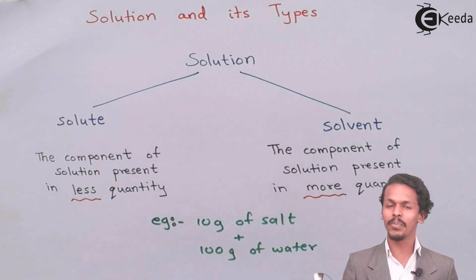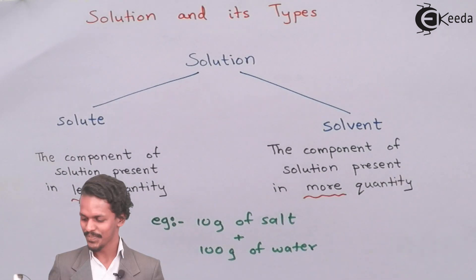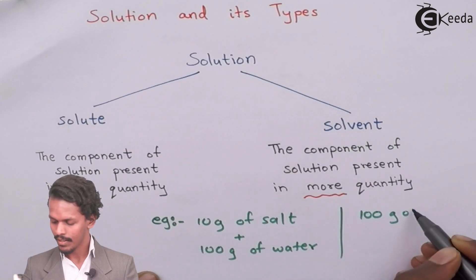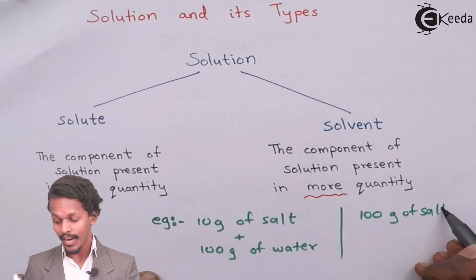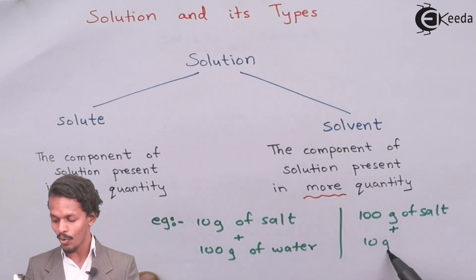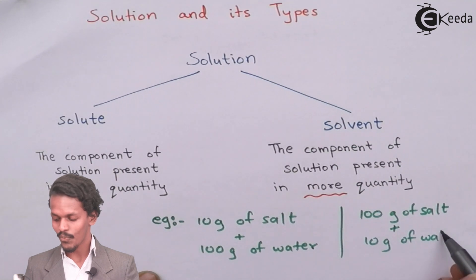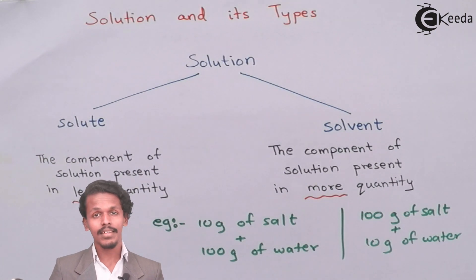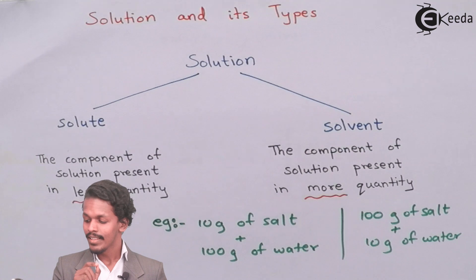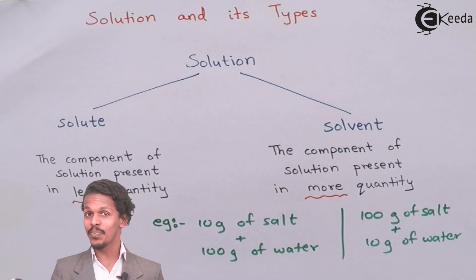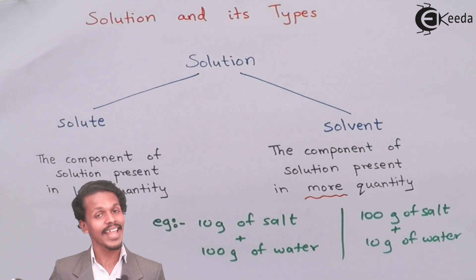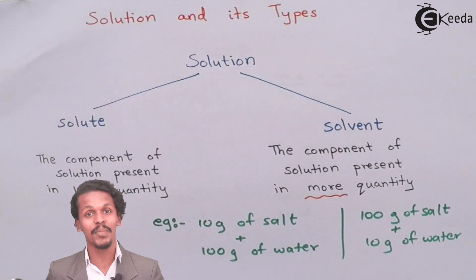Now let me take the reverse example. If I give you 100 grams of salt and 10 grams of water, then the 100 grams of salt, which is present in greater quantity, will be the solvent, and the 10 grams of water will be the solute.